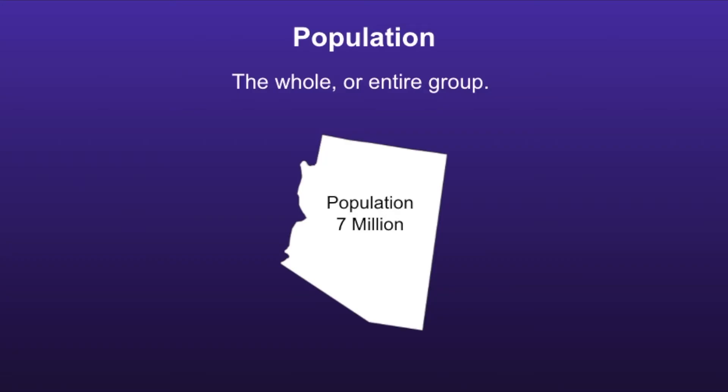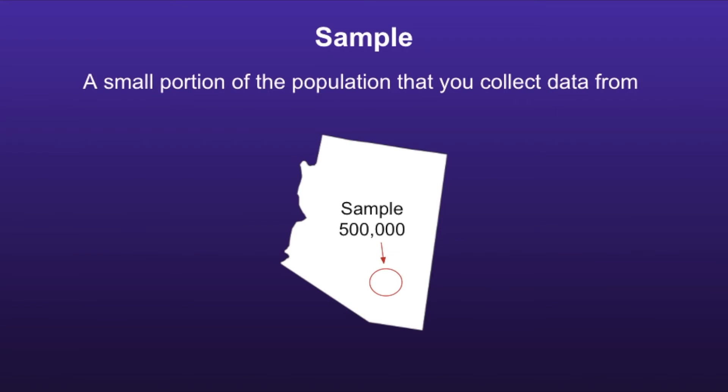The population in the state of Arizona is 7 million. Since there are 7 million people in the entire state, it wouldn't make sense to give a survey to all of these people, so instead we will use a sample. A sample is a small portion of the population that you collect data from. We can use the results of this sample to make predictions about the entire population.